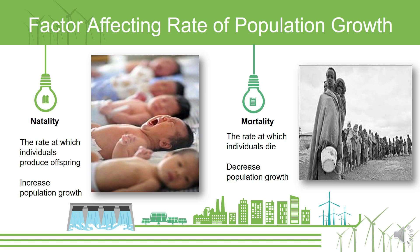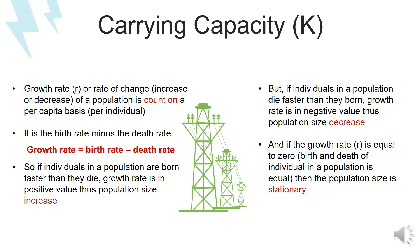There are two main factors that affect the rate of population growth: natality and mortality. Natality refers to the rate at which individuals produce offspring — birth — which increases population growth. Mortality refers to the rate at which individuals die — death — which decreases population growth.